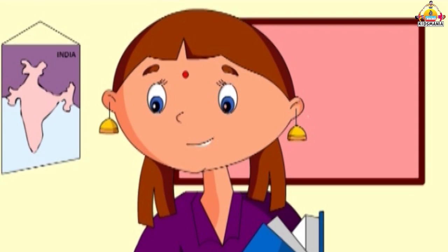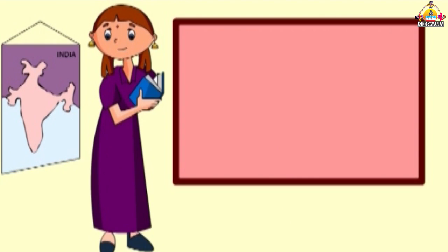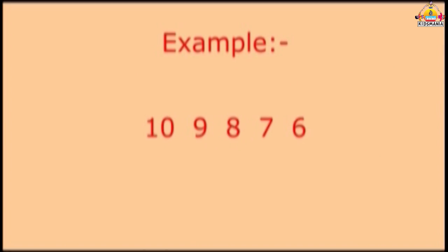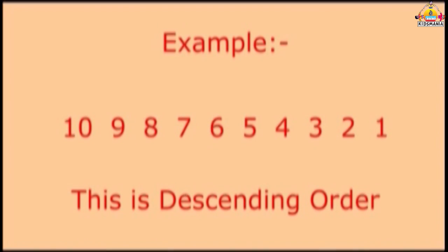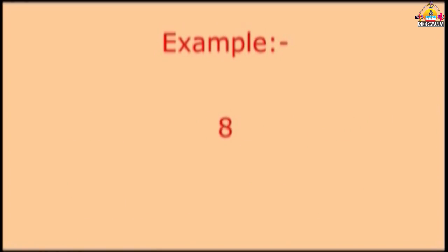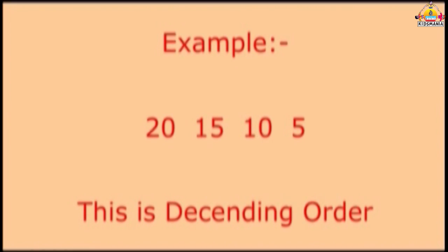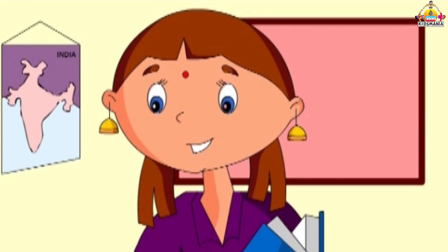As we have learnt ascending order, we now learn descending order also. Descending order means writing the numbers from big to small. For example, 10, 9, 8, 7, 6, 5, 4, 3, 2, 1. This is descending order. 8, 6, 4, 2, 9, 6, 3, 20, 50, 10, 5. These are all in descending order.